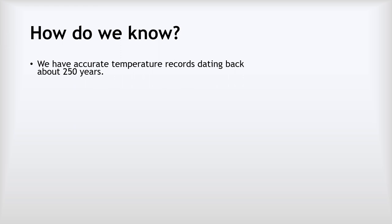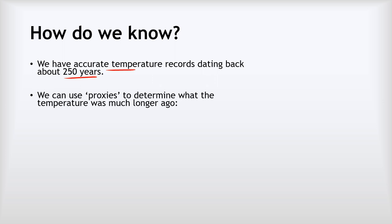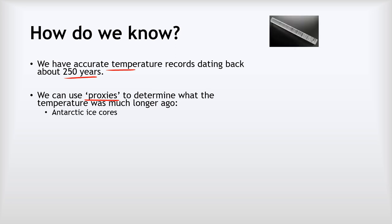We have accurate temperature records dating back about 250 years that show very clearly that temperatures around the world have increased. The second way we know is through proxies — measurements using things other than thermometers that can determine what the temperature was at the time they were formed. One example is Antarctic ice cores: the oldest ice is hundreds of thousands of years old and by analysing tiny bubbles trapped in the ice we can tell what the temperature was when it formed.